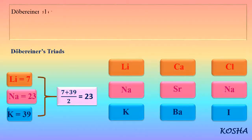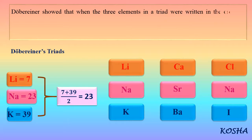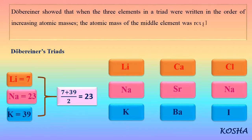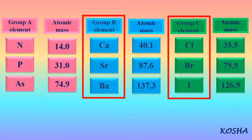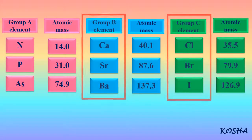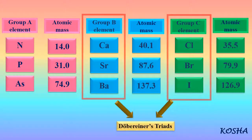Dobereiner showed that when the three elements in a triad were written in order of increasing atomic masses, the atomic mass of the middle element was roughly the average of the atomic masses of the other two elements, as given in the table below. Group B and Group C elements show Dobereiner Triads.